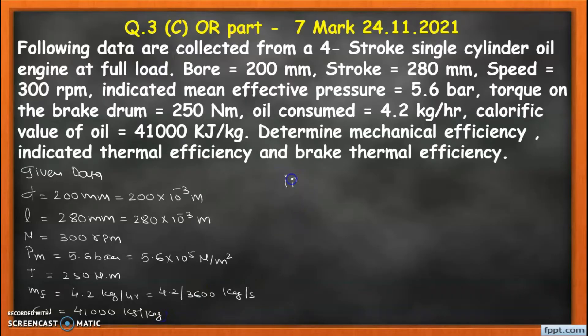Students, first of all we calculate the indicated power. So the formula is mean effective pressure into the stroke length, area, then rpm divided by 60,000, into k and x, where k is the number of cylinders and x is: if your engine is 4-stroke then you need to multiply it with 1/2, and if it is 2-stroke then x equals 1.